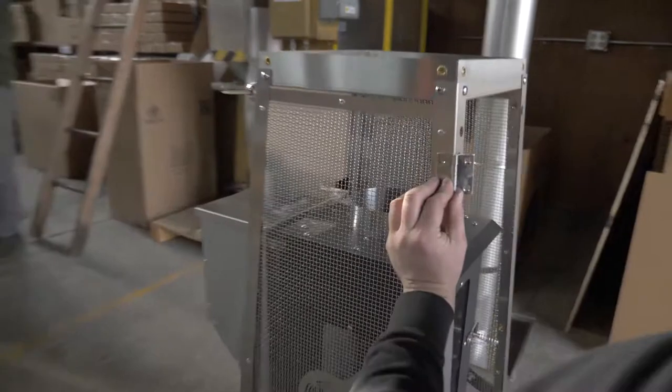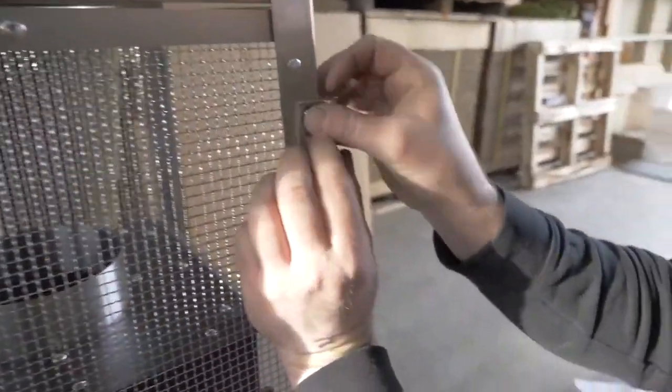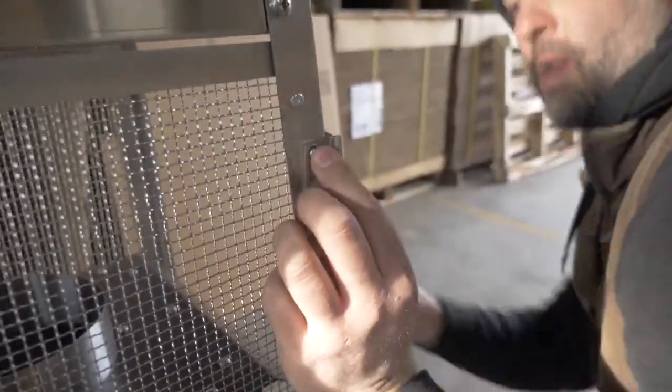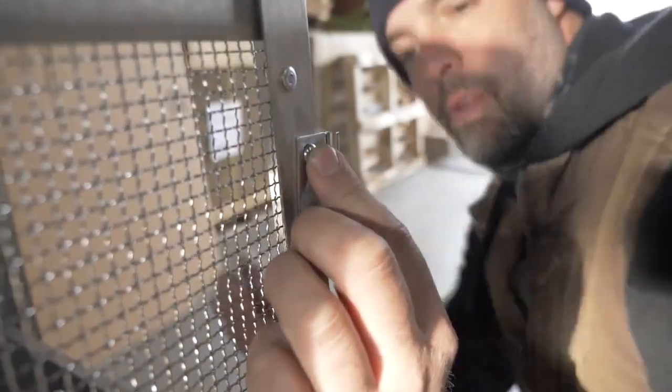Next, attach the door hinges to the left frame, the bottom of the cage, using 1032 by 1.5 inch bolts with K-nuts.